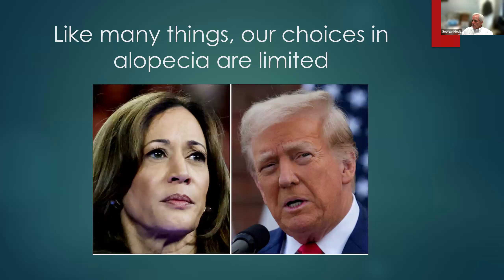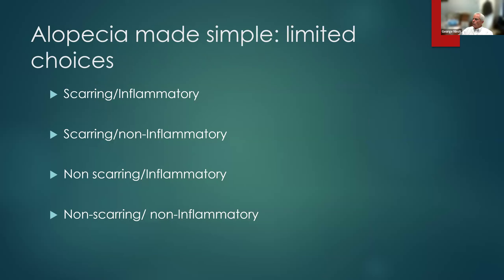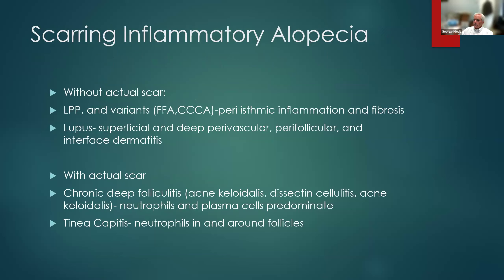Like many things in life, our choices in alopecia are limited. There are really only four classifications: scarring and inflammatory, scarring non-inflammatory, non-scarring inflammatory, and non-scarring non-inflammatory — four choices with some overlap. I got this concept partly from Bonnie Lee's lecture, which is a great lecture on alopecia available on YouTube. She made the important distinction about scarring alopecia with or without an actual scar.